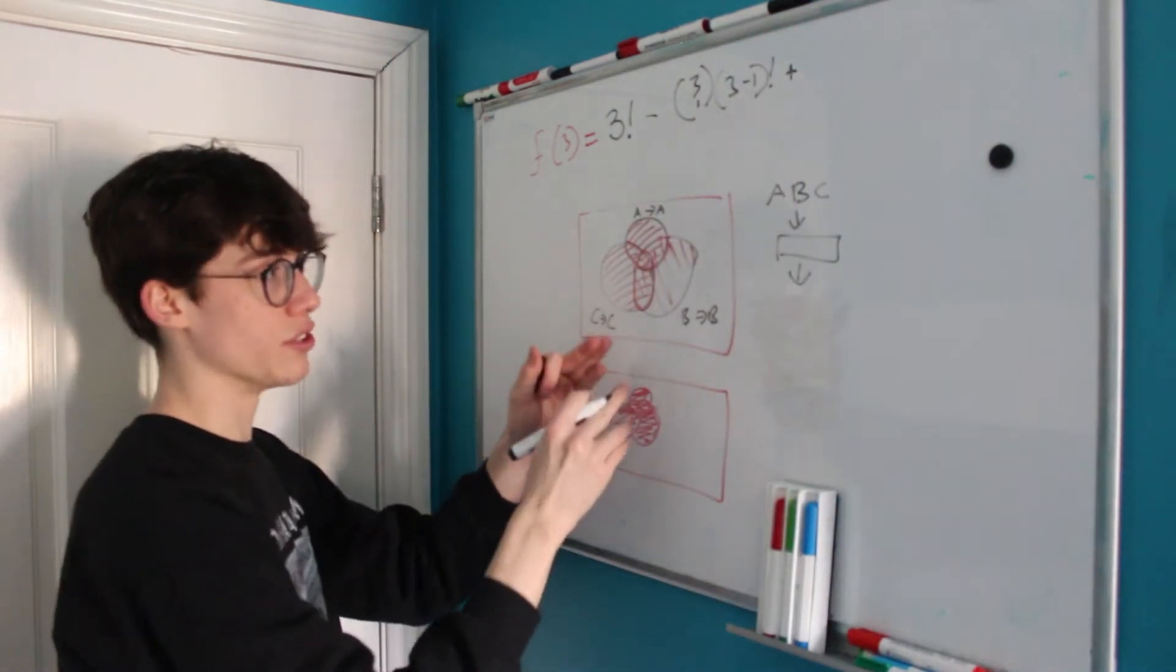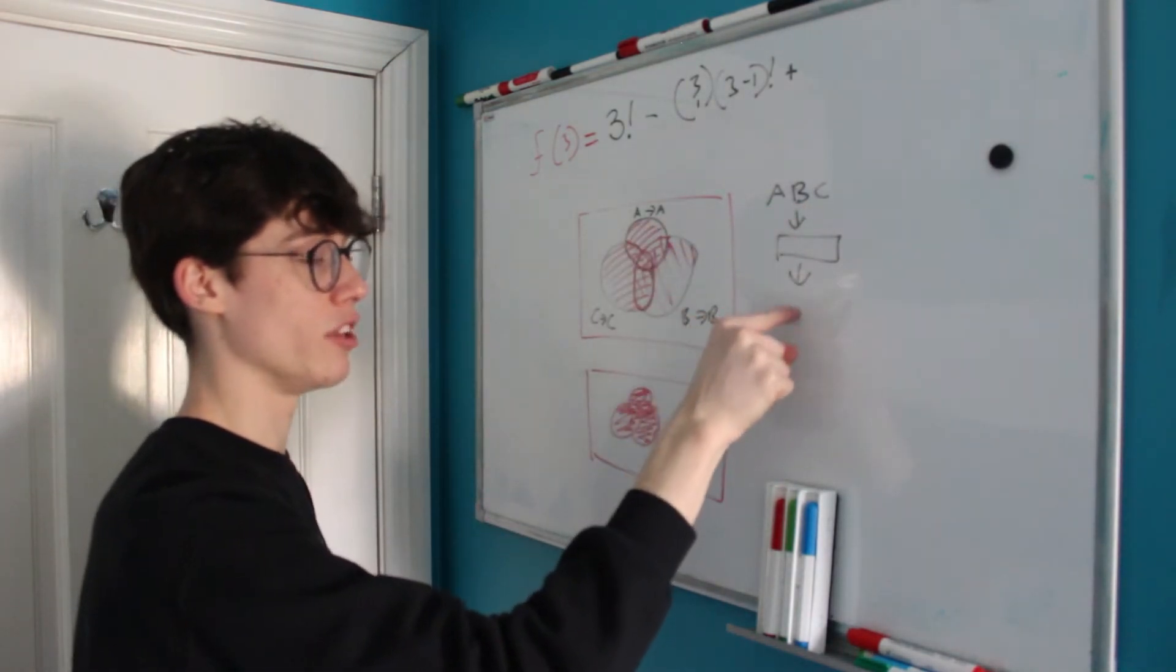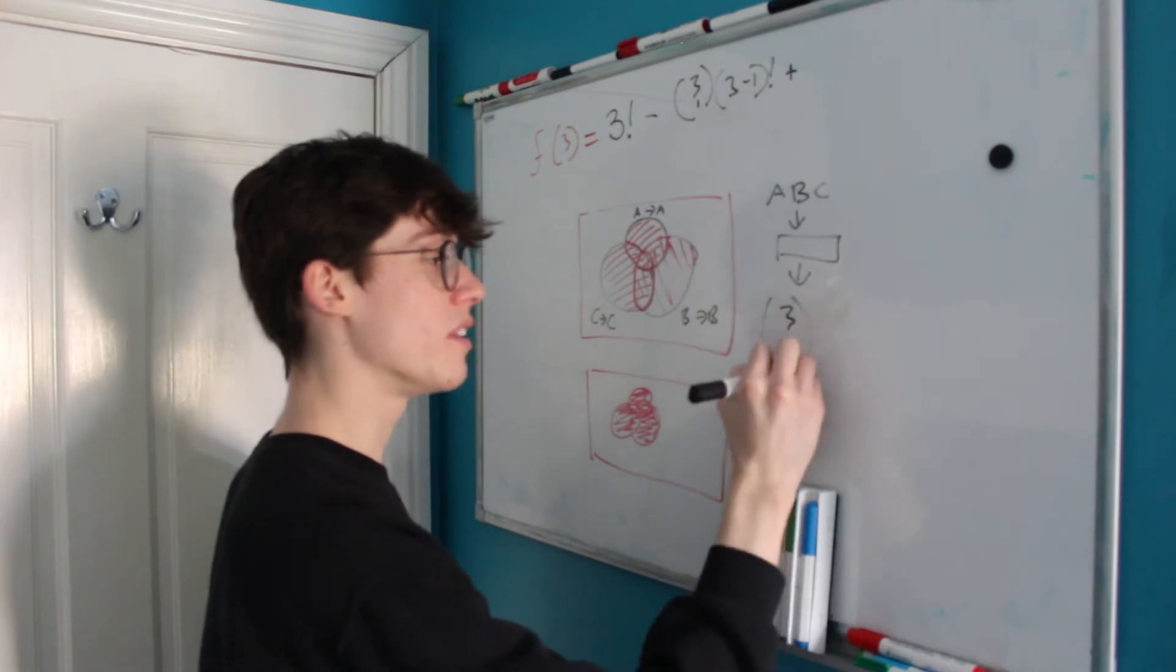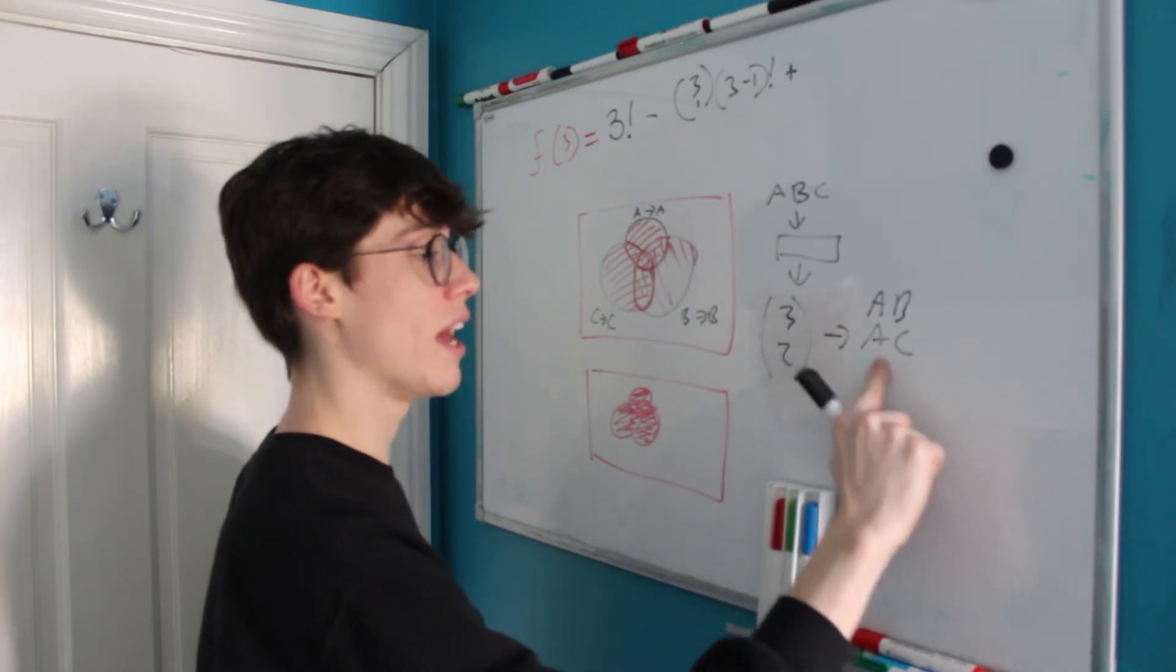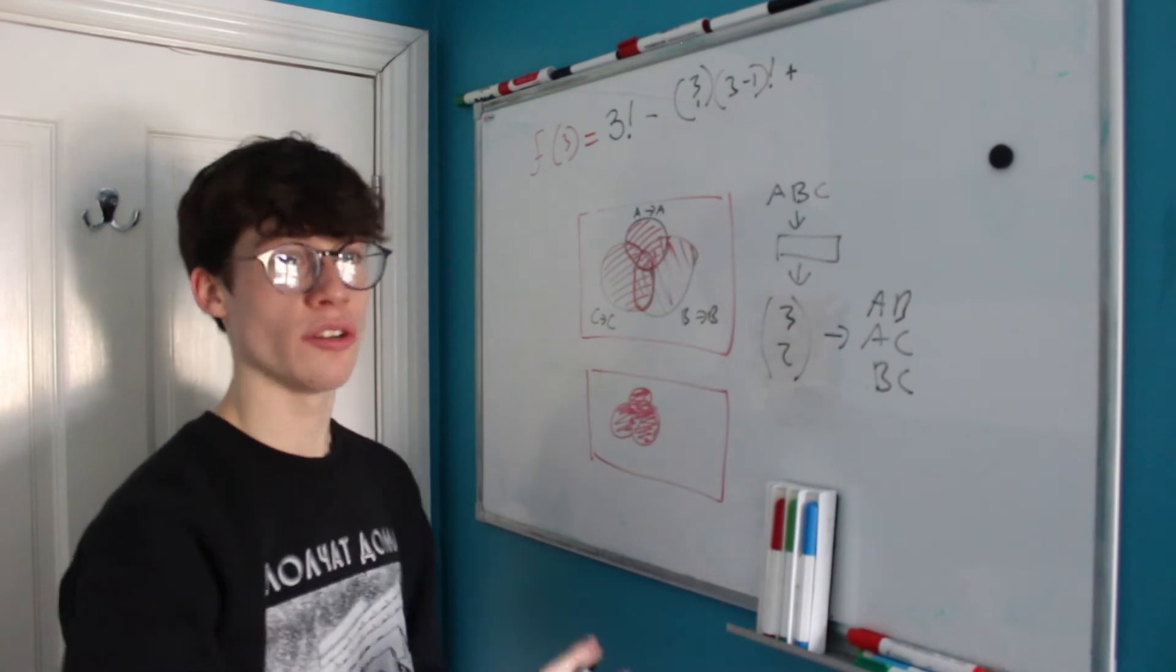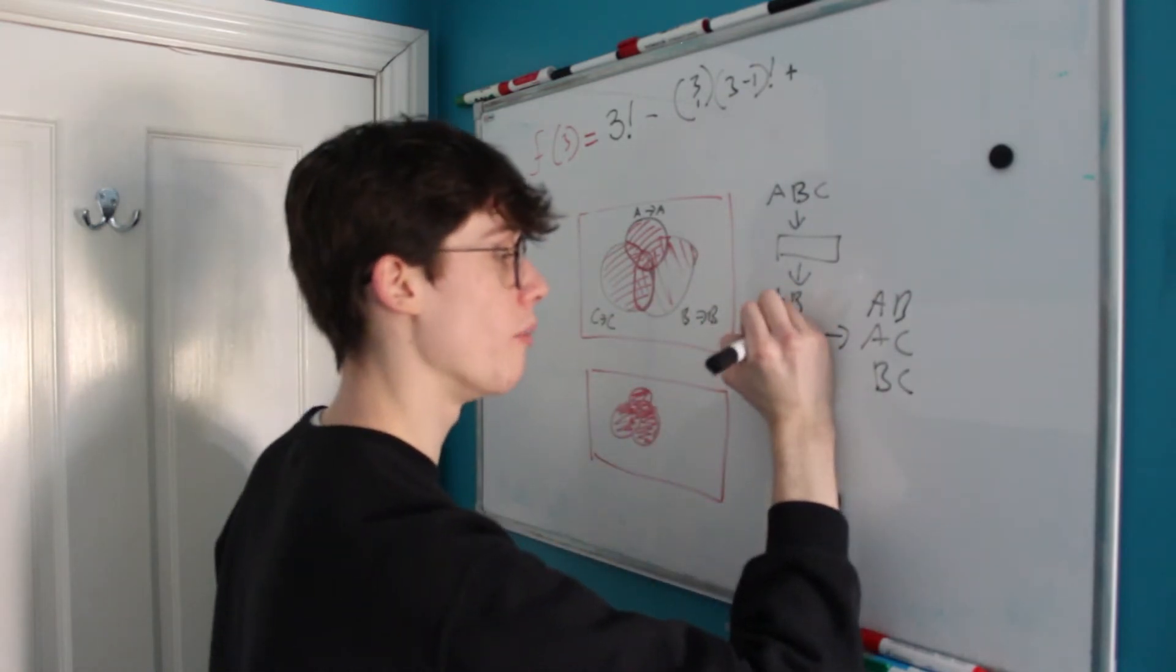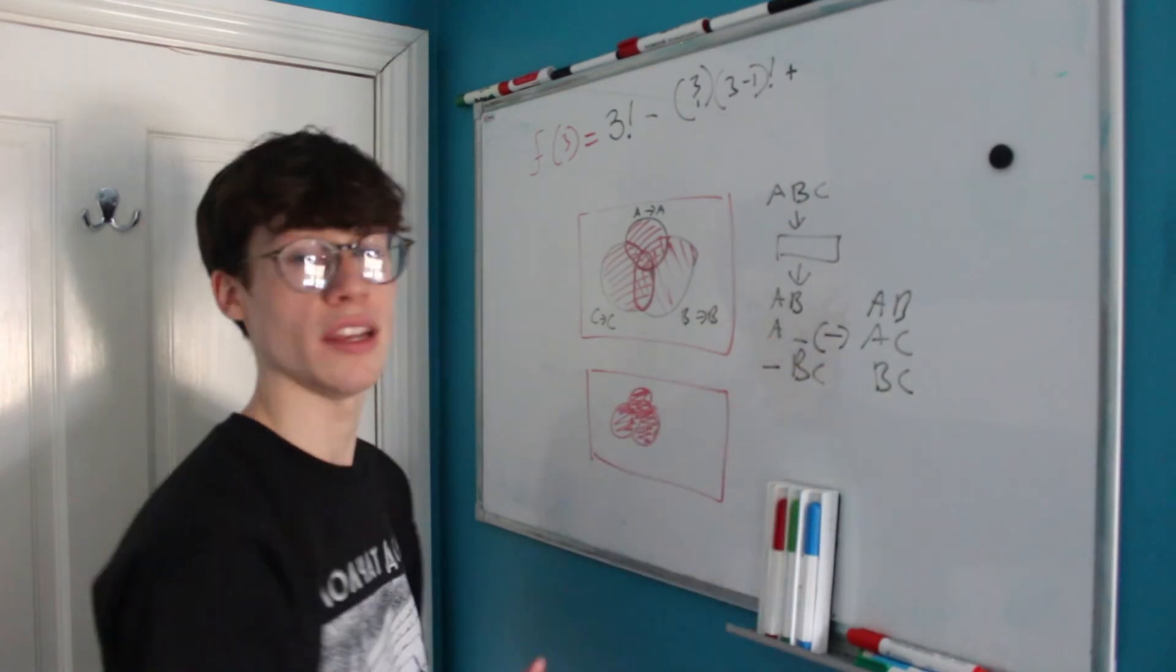Now all of the intersections are where two letters have been mapped onto the letters that they originally were so that means we're going to be using 3 choose 2 because that will give us A, B, A, C and B, C. These are all of the possible combinations of two letters that could have been mapped onto themselves.